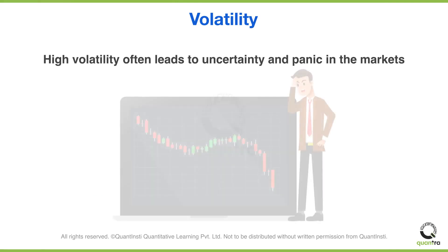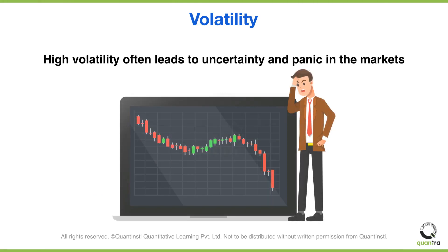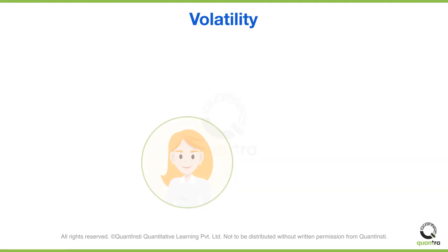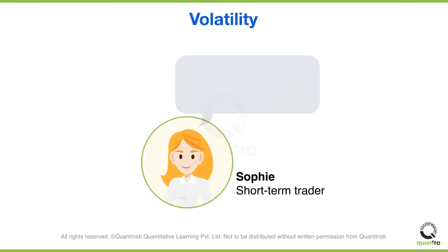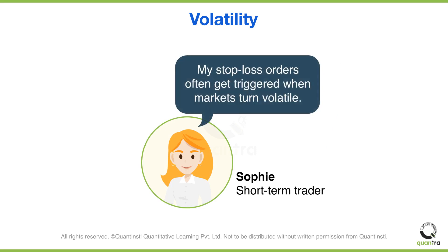You might be aware that volatility is often associated with uncertainty and panic in the markets. For instance, we have Sophie who is a short-term trader. Sophie has observed that whenever markets turn volatile, her stop-loss orders often get triggered due to the larger swings in prices.